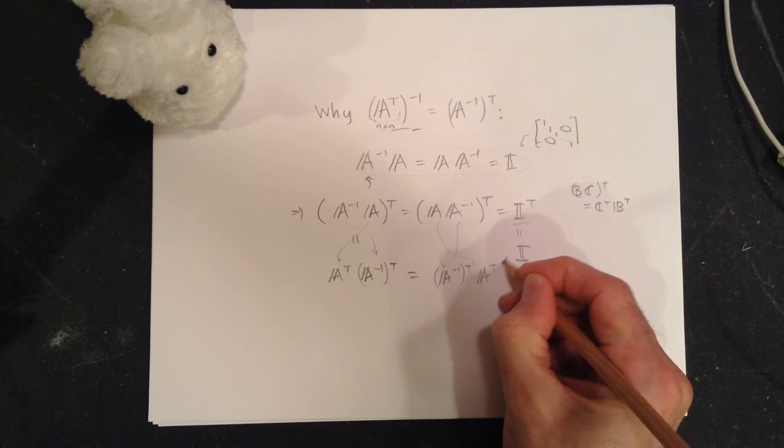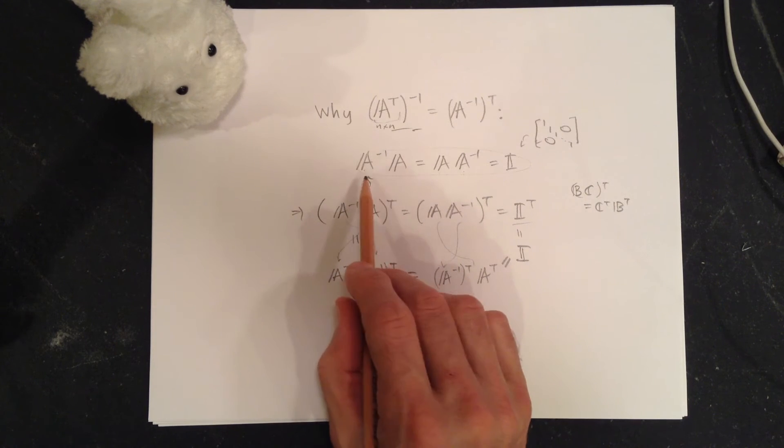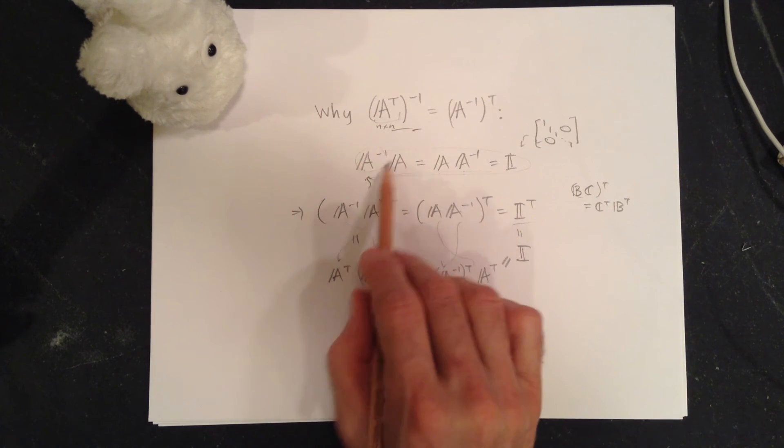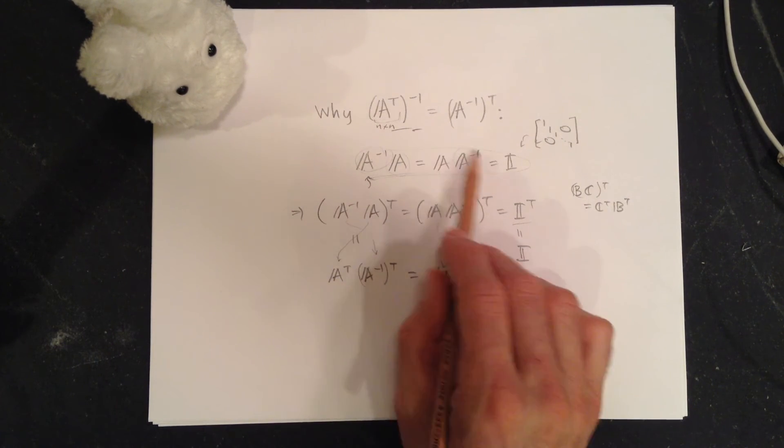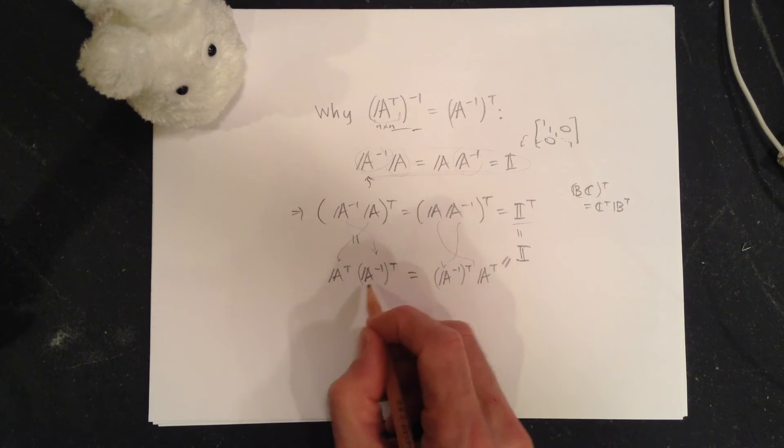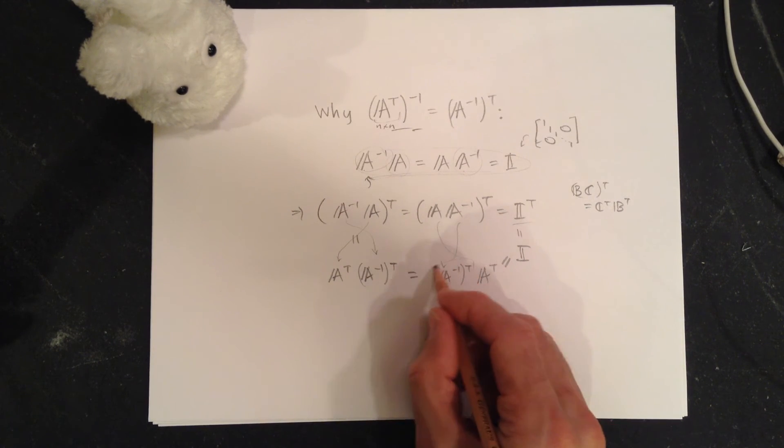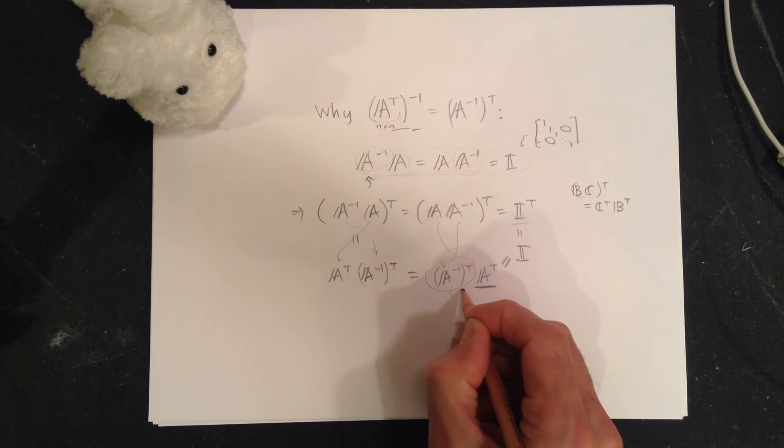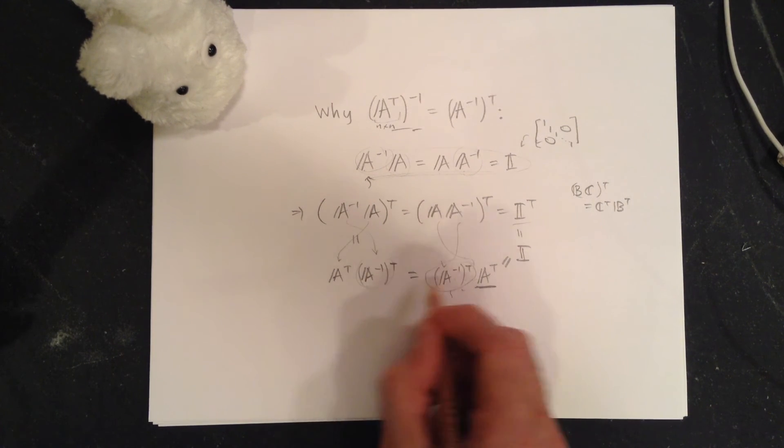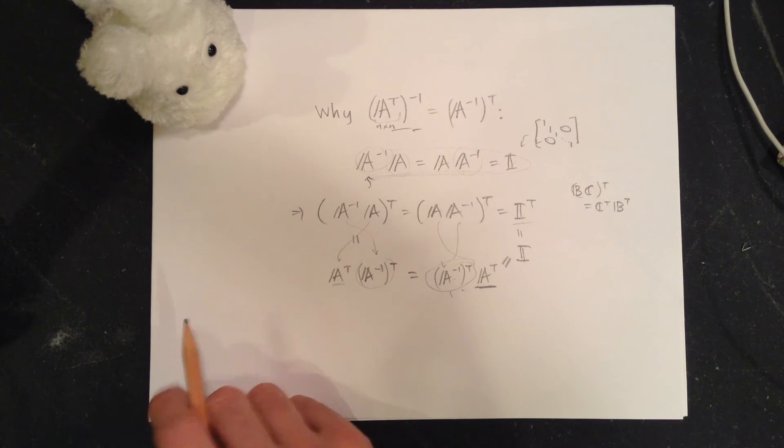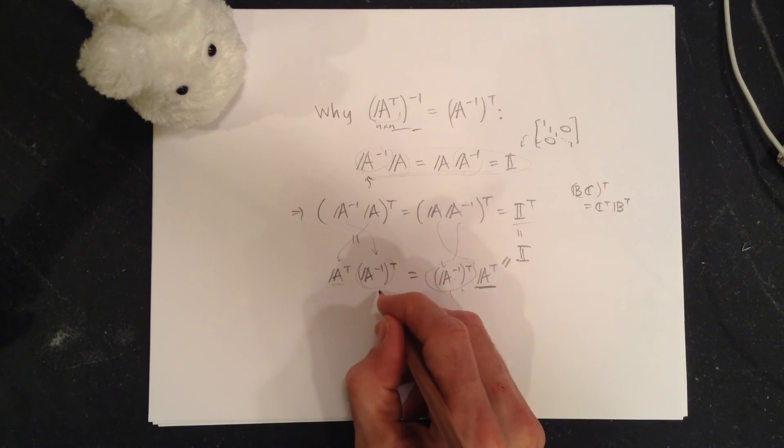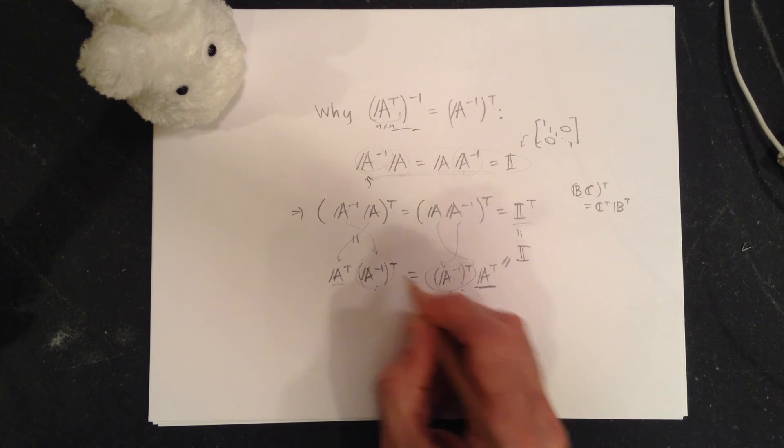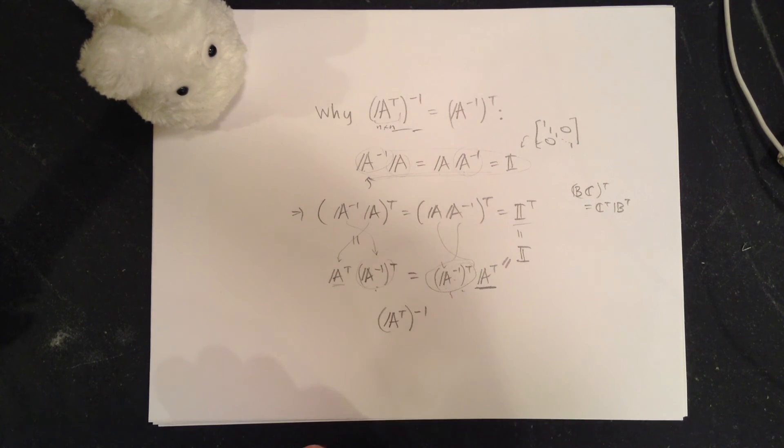So all of this is equal to the identity, so it looks just like this pattern here. We have something pre-multiplying A, post-multiplying gives us identity. Here it's been swapped around, but there's a blob here that multiplies A transpose, pre-multiplies, and the same blob post-multiplies A transpose to give the identity. So this blob has to be the inverse of A transpose.